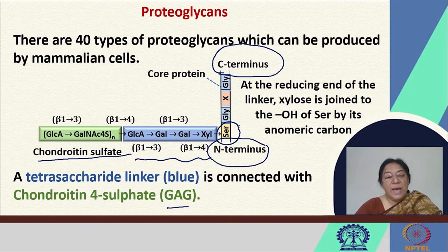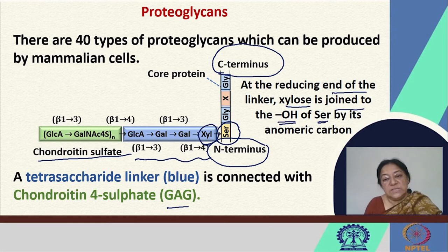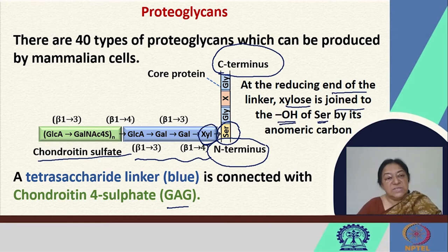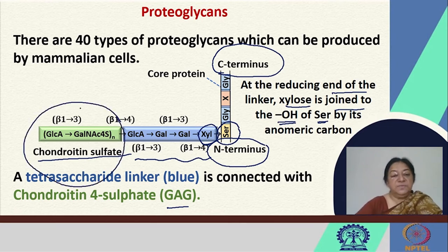At the reducing end of the linker, xylose for example is joined to the OH of the serine amino acid side chain by its anomeric carbon. This tetrasaccharide linker then connects the protein with the specific chondroitin sulfate.